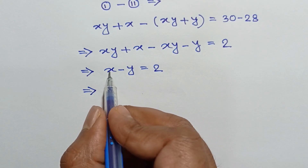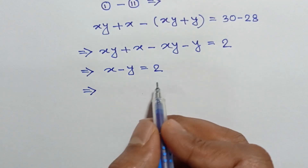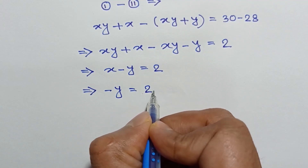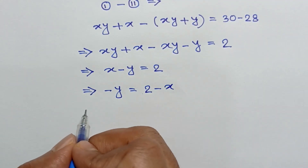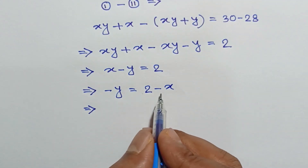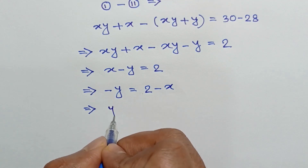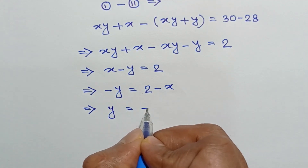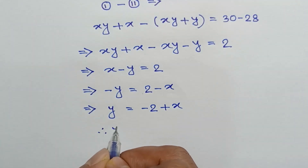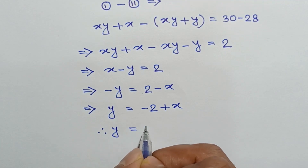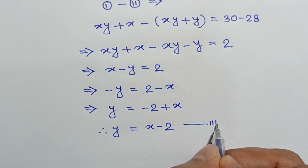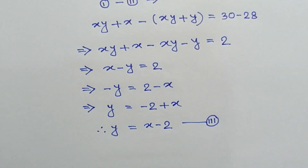Taking x to the right side, we will have negative y is equal to 2 minus x. Multiplying both sides by negative 1, we will have y is equal to negative 2 plus x, so y is equal to x minus 2.